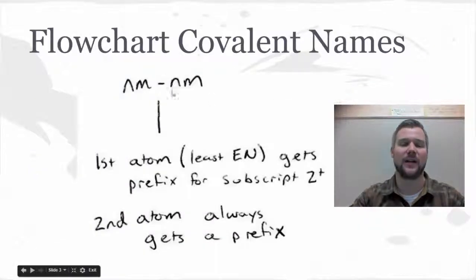The flowchart. So you've identified this as a covalent compound because there's two nonmetals stuck to each other. The first atom is a nonmetal. The first atom, as I said, is the least electronegative. It's going to get a prefix for a subscript of two or higher. And the second atom always gets that prefix.